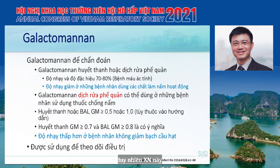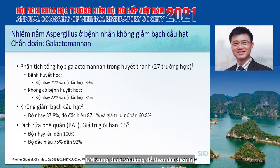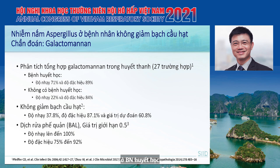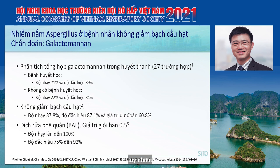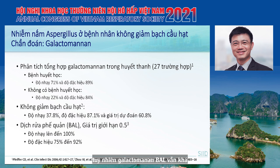However, galactomannan testing has less sensitivity in non-neutropenic patients. This is confirmed by data showing sensitivity of only 22 to 37% in non-neutropenic patients. BAL galactomannan remains quite useful with high sensitivity and specificity in both hematologic and non-hematologic patients. Galactomannan can also be used for treatment monitoring.